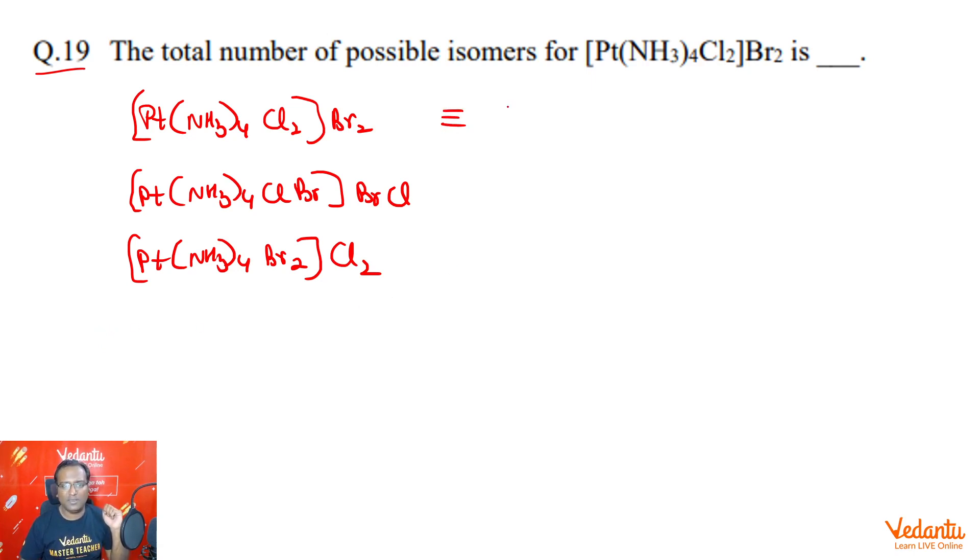Now, this can be written as MA4B2. We know that MA4B2 forms two geometrical isomers. One is cis, one is trans, in which B2 is cis, B2 is trans and both are optically inactive.